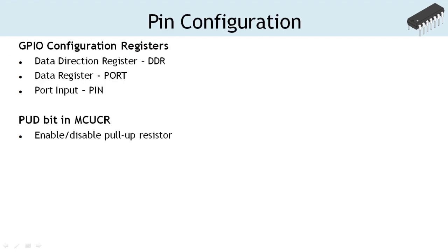Three registers — namely the data direction register, data register, and port input register — are used to configure the GPIO ports. Each GPIO port B, C, and D has its own set of control registers. In all, the ATmega328 microcontroller has 9 registers to configure the GPIO ports. Apart from these, bit 4 — the pull-up disable bit in the microcontroller control register MCUCR — is used to globally disable the pull-up resistor associated with each port pin.